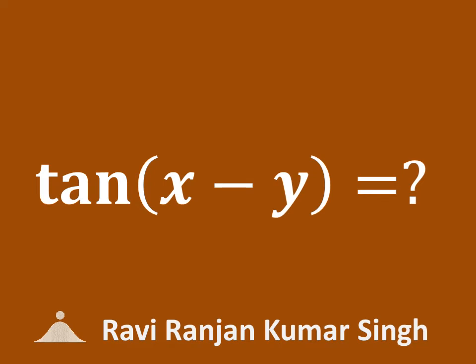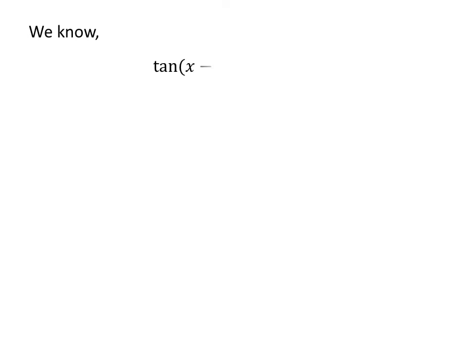In this video, we will learn to derive the trigonometric identity for tangent of x minus y. We know tangent of x minus y is equal to sine of x minus y upon cosine of x minus y.